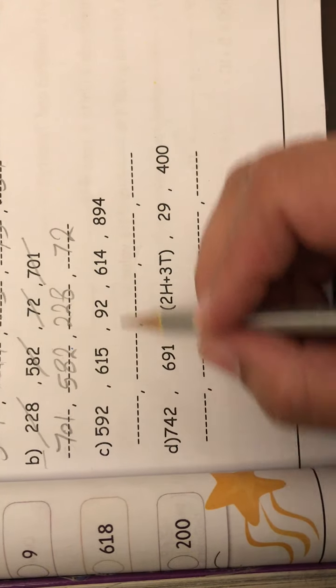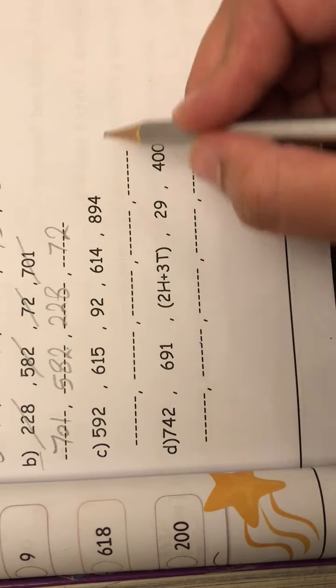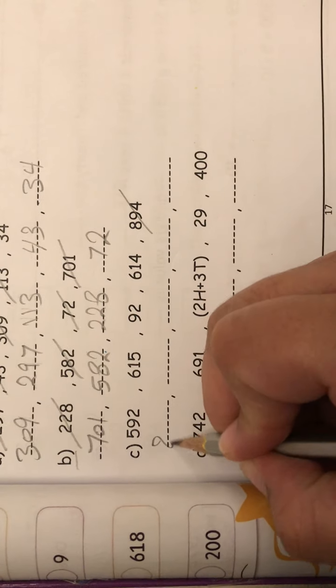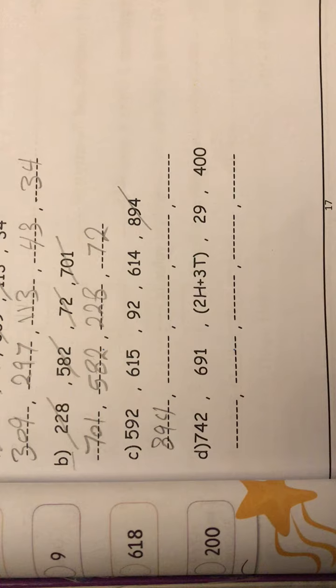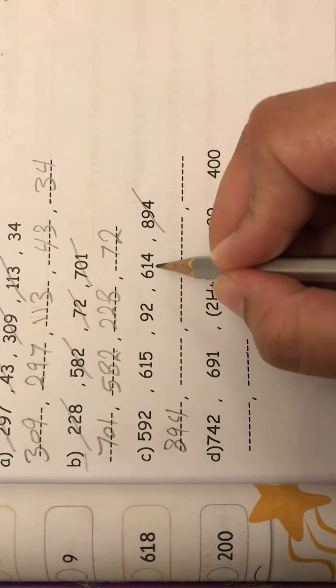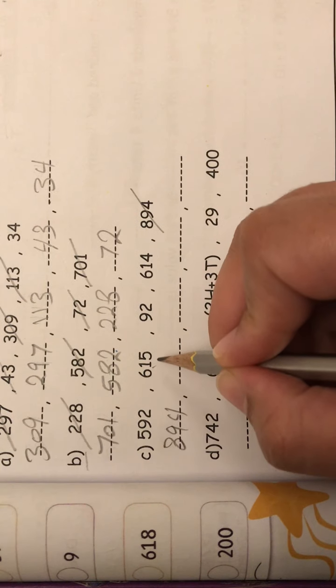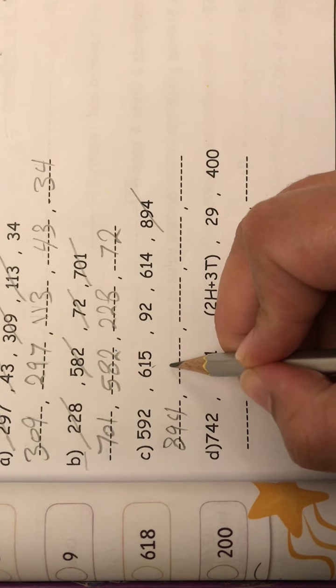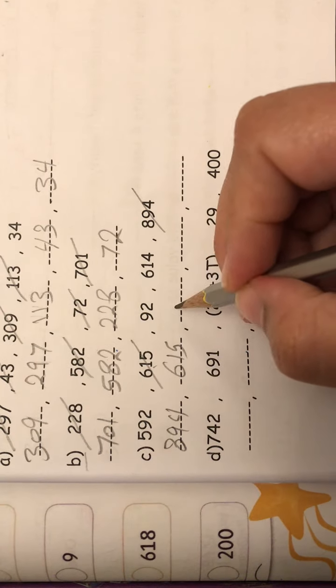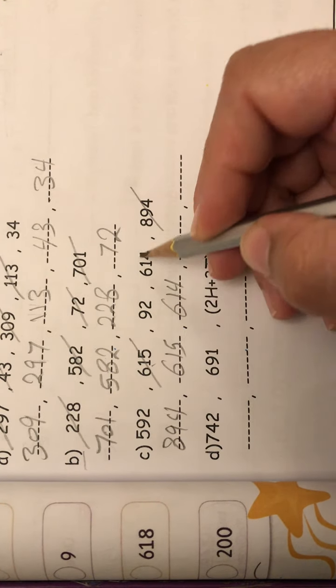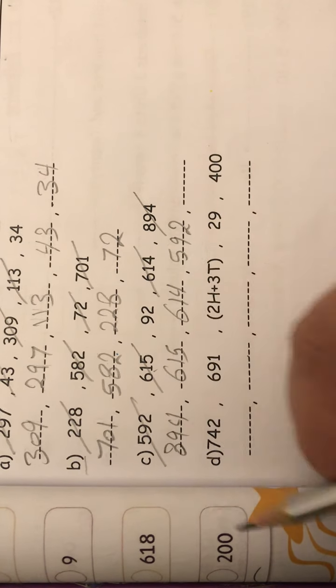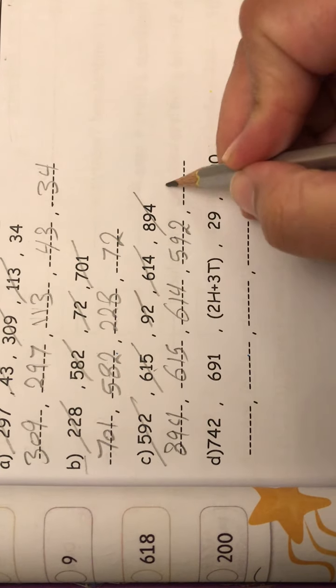Another one. Yes. We will start with a number. Excellent. 894. And next, 600. Yeah. Here or here? No. Right. 615. Excellent. So after, 614, and 592. And finally, 92.